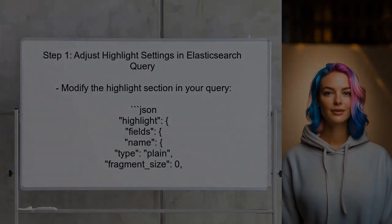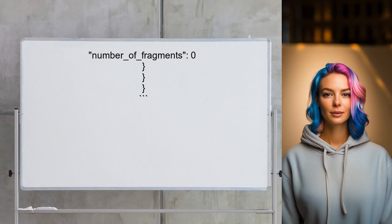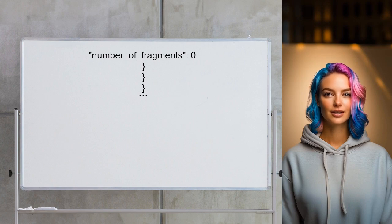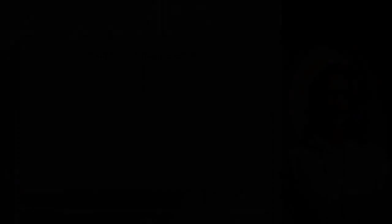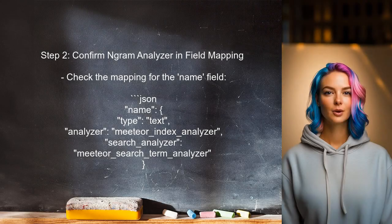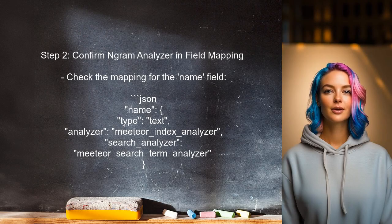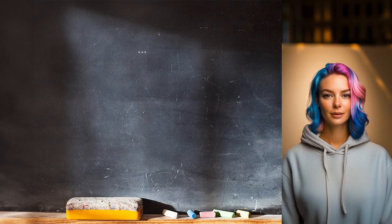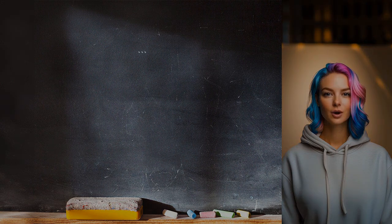To highlight only the NGram tokens that match, the user needs to adjust the highlight settings in their Elasticsearch query. This involves specifying the correct parameters in the highlights section. Next, the user should ensure that the NGram analyzer is applied correctly to the field they want to highlight. This means confirming that the field mapping includes the NGram analyzer.